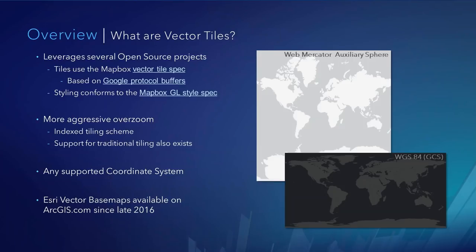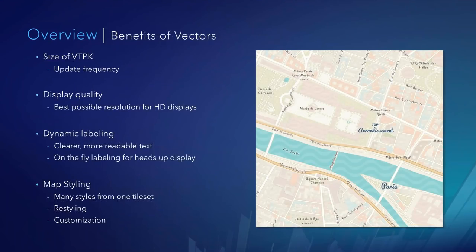We can also create maps in any of the supported coordinate systems. While we do call them Esri's newest basemaps, they have been available on ArcGIS.com since late 2016 for production use, and even back to 2015 in beta format. One benefit of using vector basemaps is the size of our VTPK — compared with raster basemaps, the vector VTPK is much, much smaller. It also allows us to do updates a lot more rapidly. We're publishing a single VTPK and then publishing the styles that all point to that single tile package.